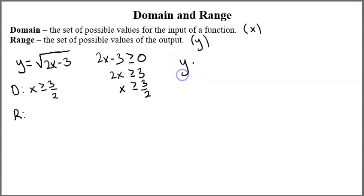So Y is going to equal the square root of 2 times 3 halves minus 3, and 2 times 3 halves is 3, so 3 minus 3 is 0. That makes sense because this value gave me exactly 0. Since I know the smallest number I could take the square root of is 0 and I can only get positive values, Y has to be greater than or equal to 0.